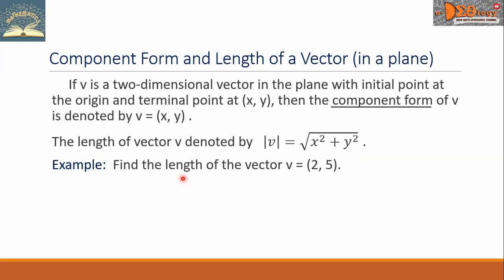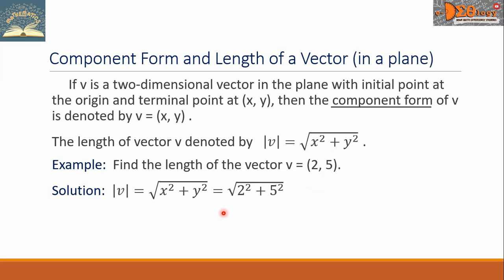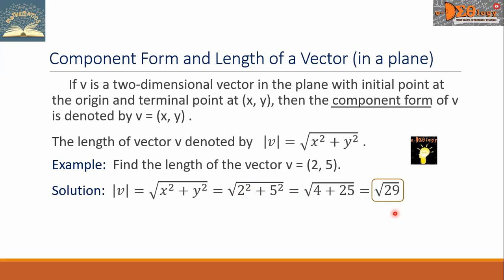Example: find the length of the vector V equals (2, 5). Using our formula, let us substitute the corresponding values. This is equal to the square root of the quantity 2 squared plus 5 squared, which gives us the square root of 4 plus 25. The final answer is the square root of 29.